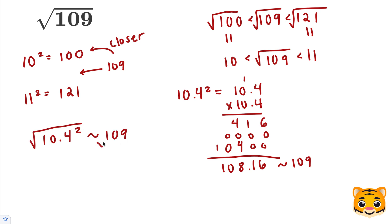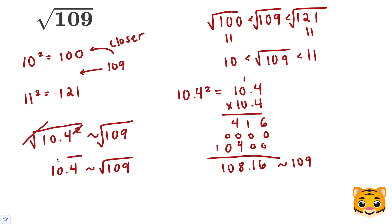Taking the square root of both sides, we'll cancel the squared and the square root for the 10.4, leaving us with 10.4 is approximately the square root of 109, and this will be our approximated solution.